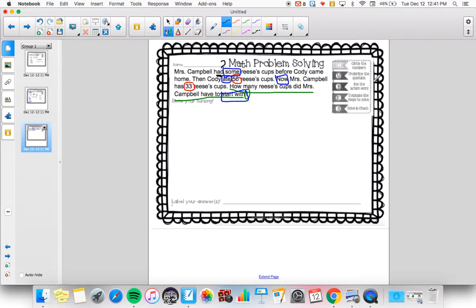So first thing that we'll need to do is evaluate what we're doing. We already evaluated that ate meant that we were going to subtract. So Ms. Campbell had sum. Sum is what we don't know. That's our box. That's our question mark. He ate, which means we're subtracting 56, now means those equal signs. We have 33.